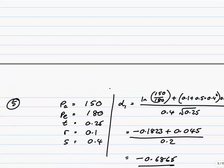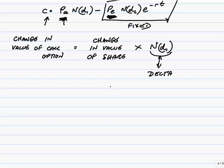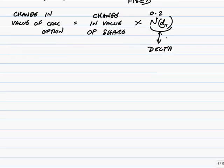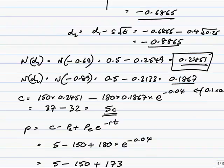Looking back to what I just said, for that example, as the value of a share changes, the value of a call option will change as well, and the change will be times ND1, 0.2451.